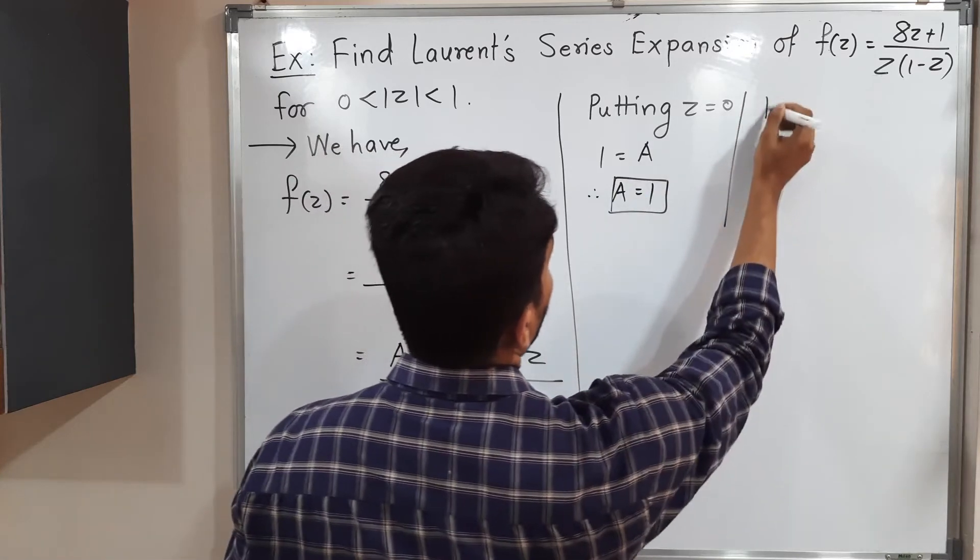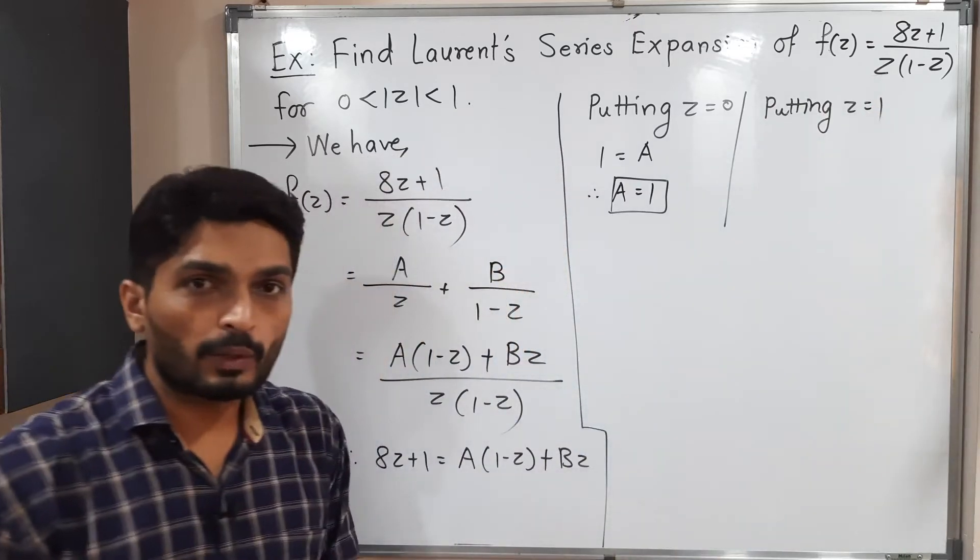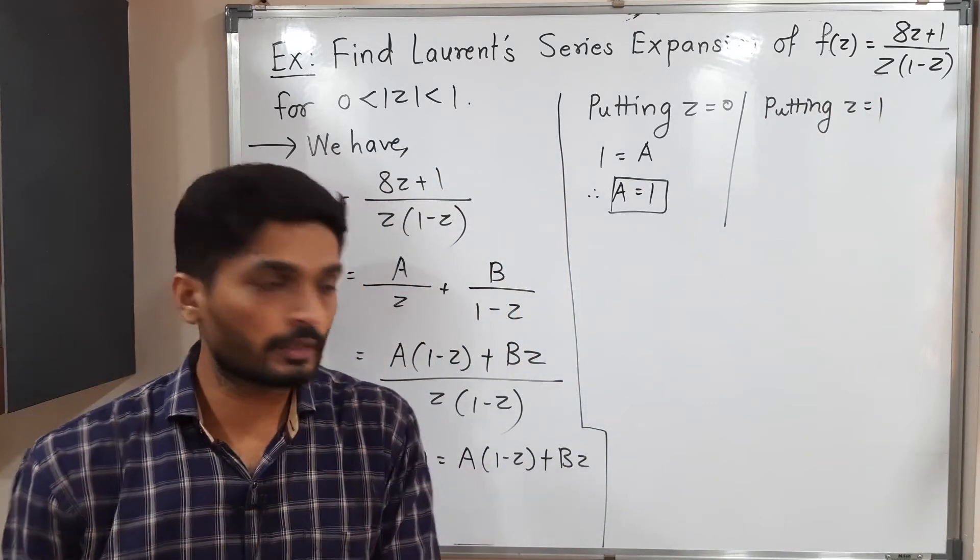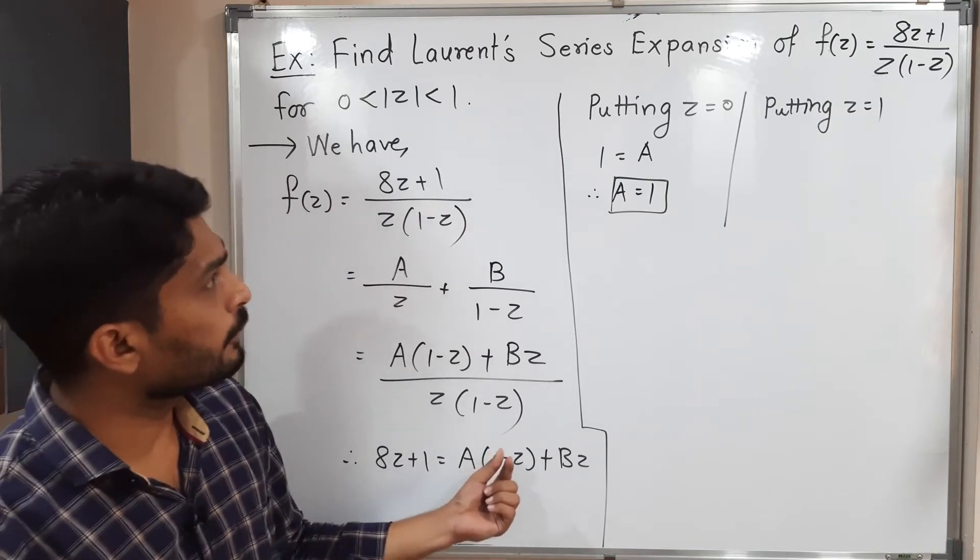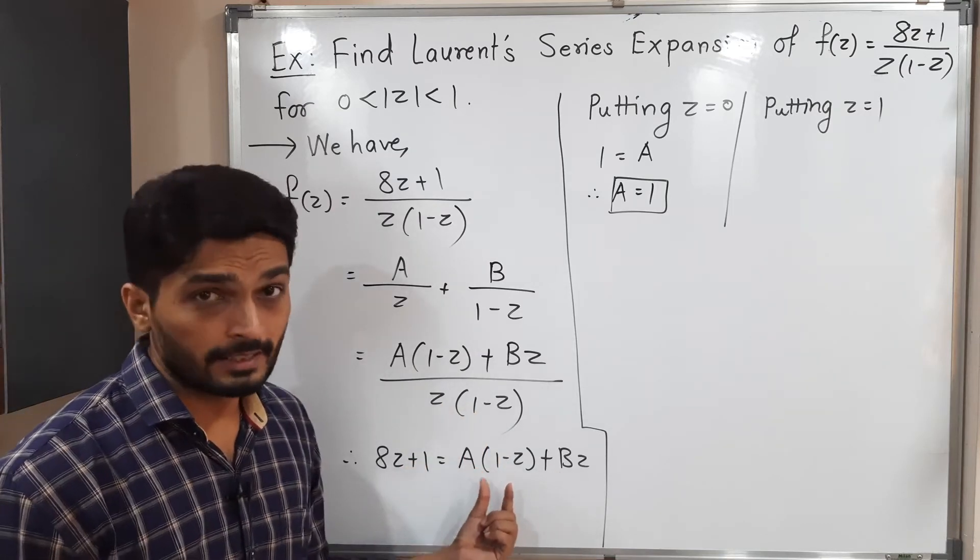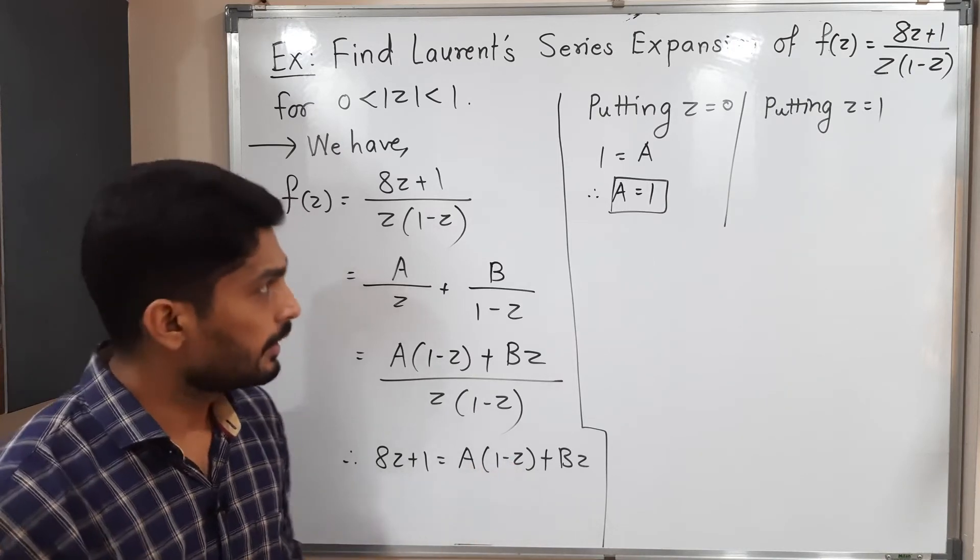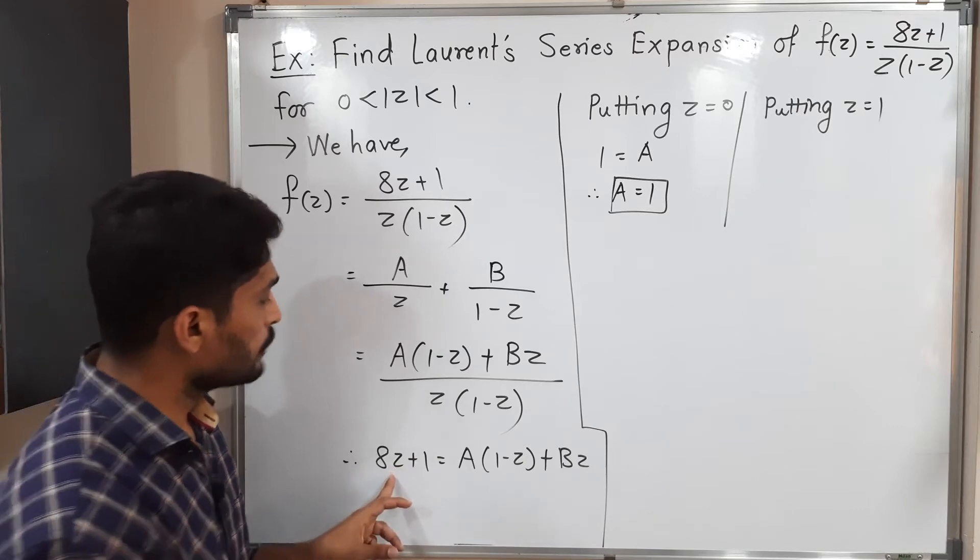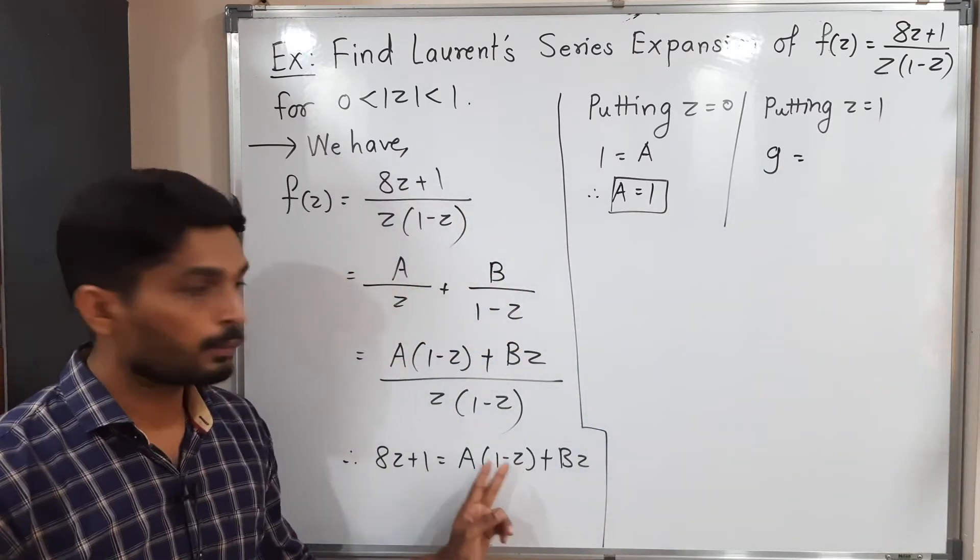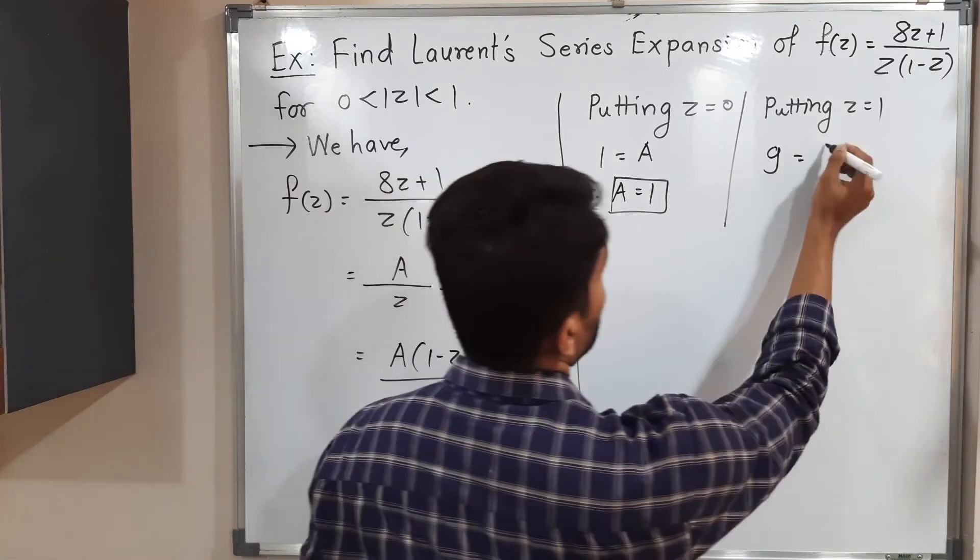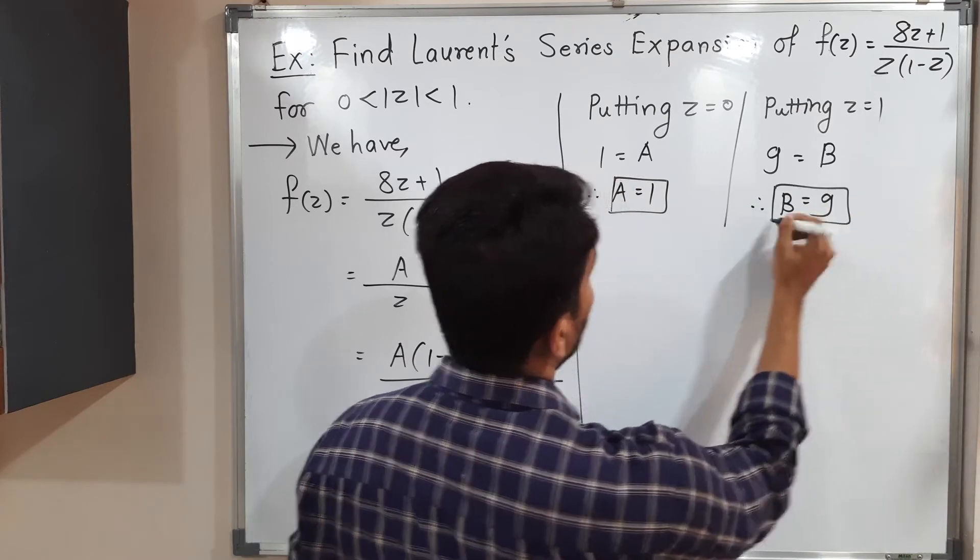Next, to find the value of B, I will put z equal to 1. Our target is to make one bracket 0, then you can easily find the value of the second coefficient. Here we want the value of B, so that is why I am trying to make it 0. If I put z equal to 1, 1 minus 1 equals 0 we will have. Let us put z equal to 1. Here on this side you will have 9. If I put z equal to 1 here, 1 minus 1 is 0. And on that side you will have B. What is the value of B? 9. So in this way we got values of A and B.